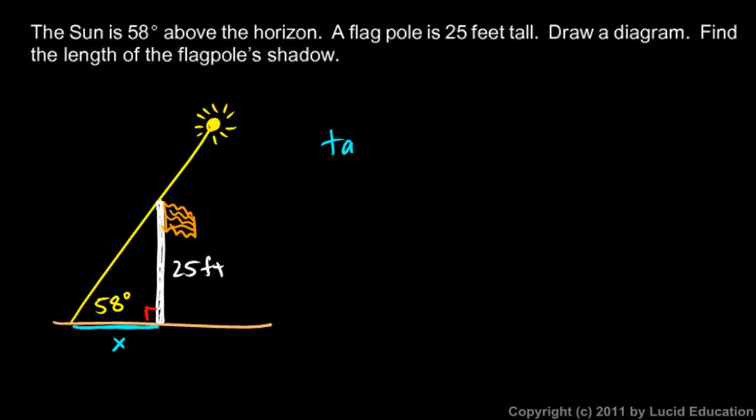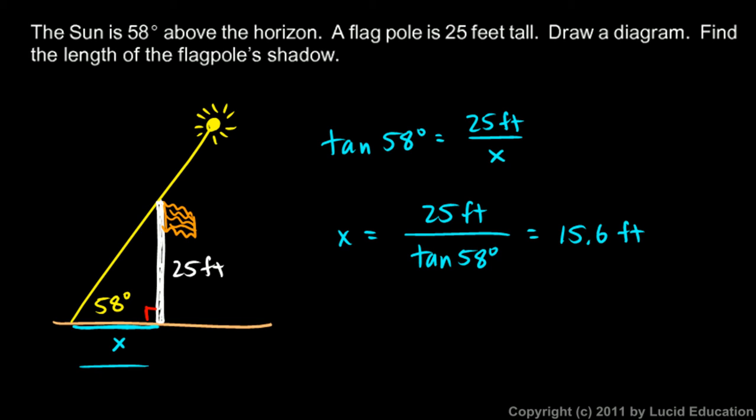Let's think about the tangent ratio. The tangent of 58 degrees will be opposite over adjacent, so that's 25 feet over x. Rearrange that algebraically and you get x is 25 feet over the tangent of 58 degrees. On the calculator, that comes out to 15.6 feet. That's the length of the shadow.